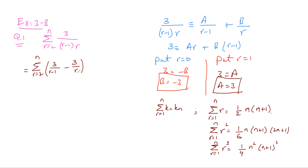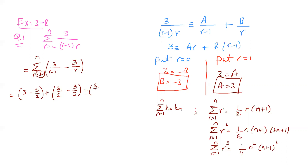The method is to start putting values of r. When I put r=2, this becomes 3 minus 3/2. That is the first term. Then I put r=3: this will be 3/2 minus 3/3. Then I put r=4: this is 3/3 minus 3/4. I keep on writing this.